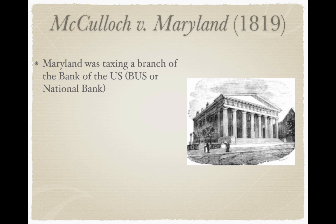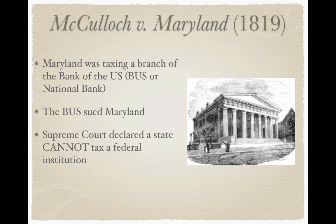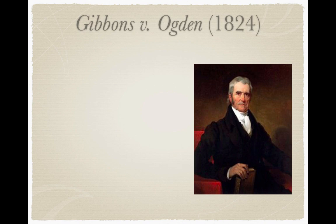McCulloch v. Maryland from 1819: Maryland was taxing a branch of the Bank of the United States — the national bank, part of Henry Clay's American System. The bank sued Maryland, saying you can't do that. The Supreme Court declared a state cannot tax a federal institution, saying the power to tax is the power to kill an institution, and the federal government is supreme over states. Early debates over who was supreme were settled by cases like this.